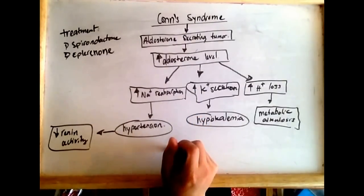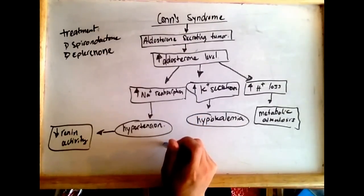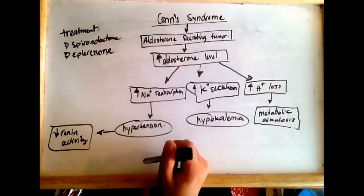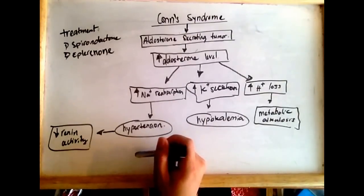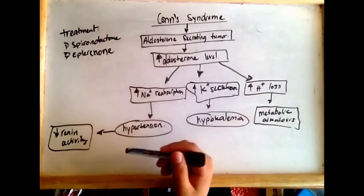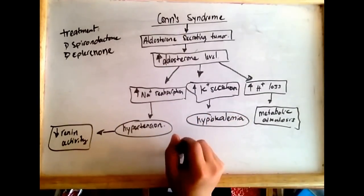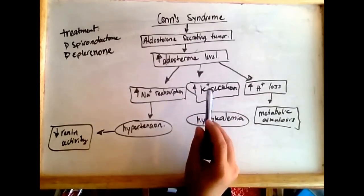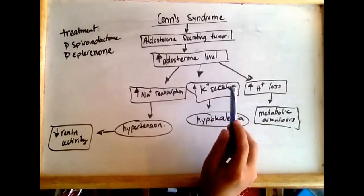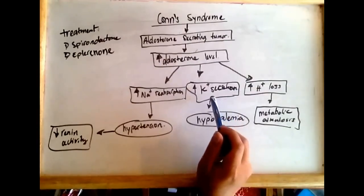Hypertension will lead to a decrease in renin activity and a decrease in the production of renin, because now we have higher blood pressure.